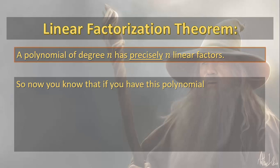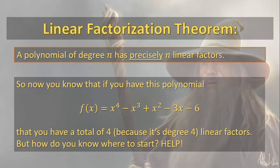So now you know that if you have this polynomial, x to the fourth minus x to the third plus x squared minus 3x minus 6, that you have a total of 4, because it's degree 4, linear factors. Isn't that swell?